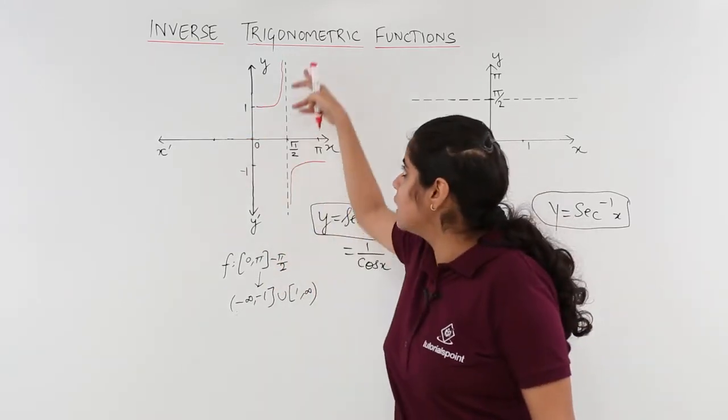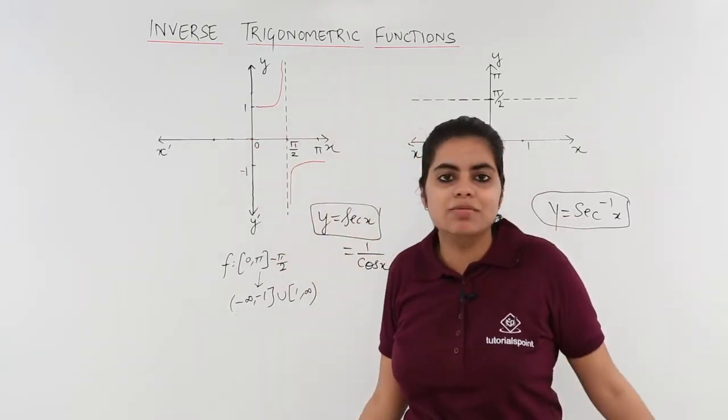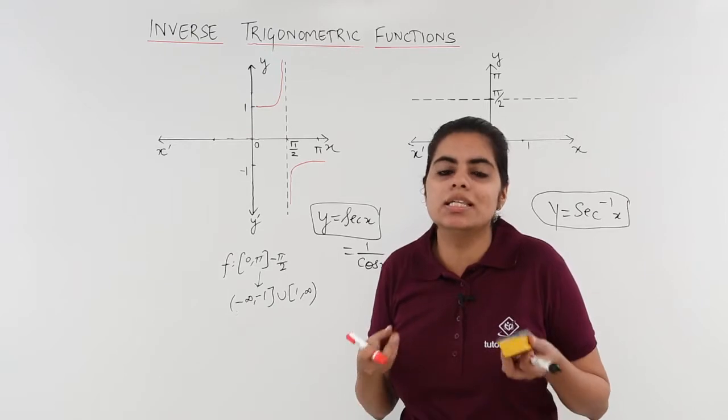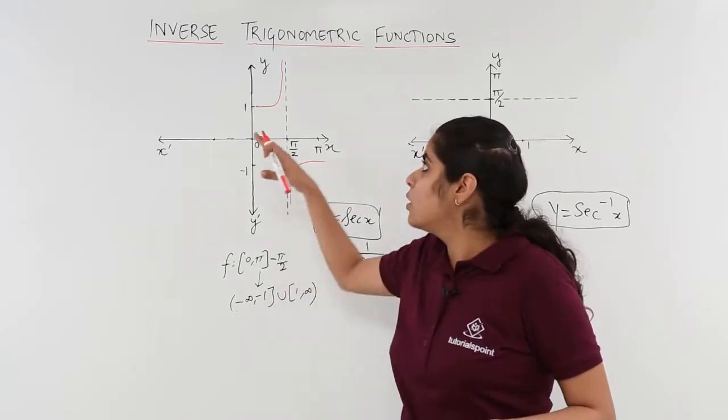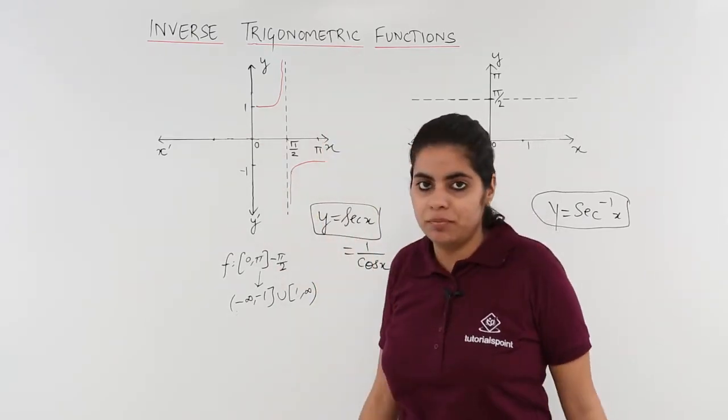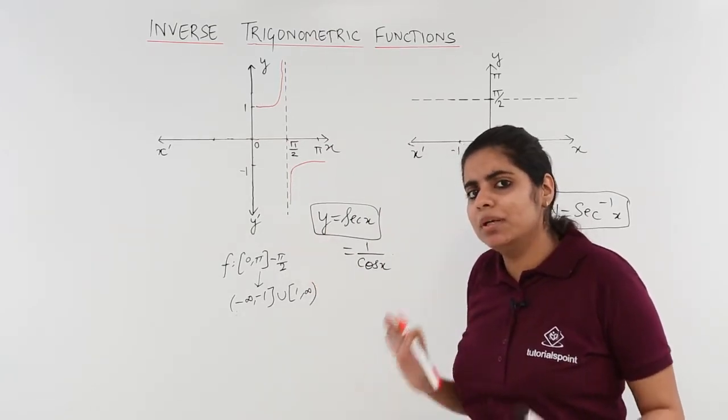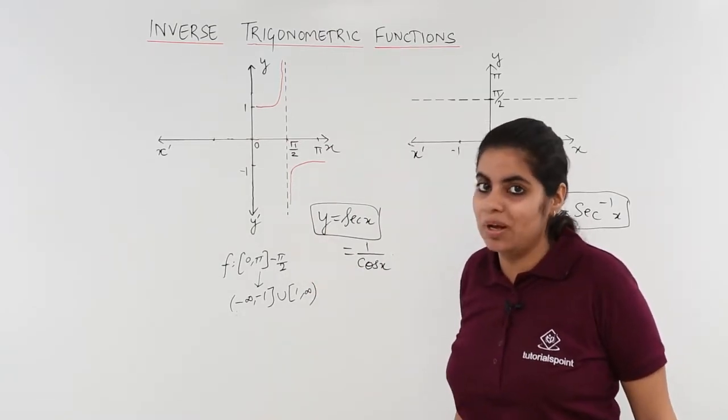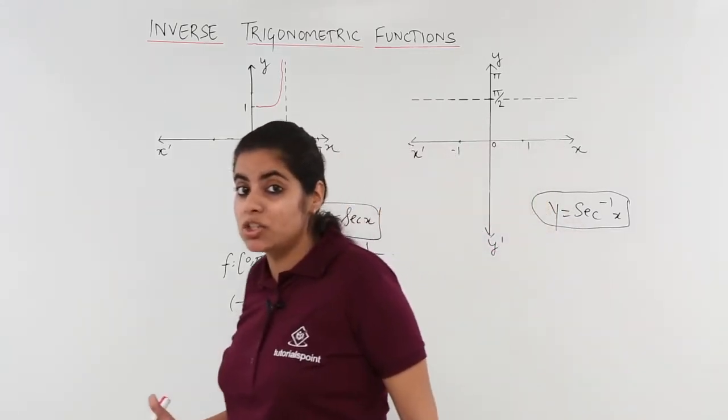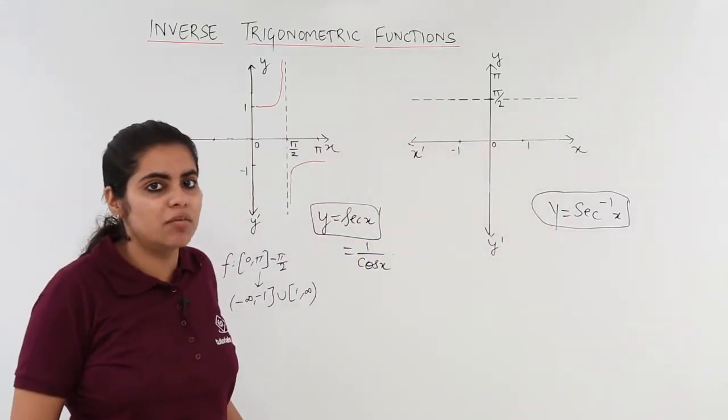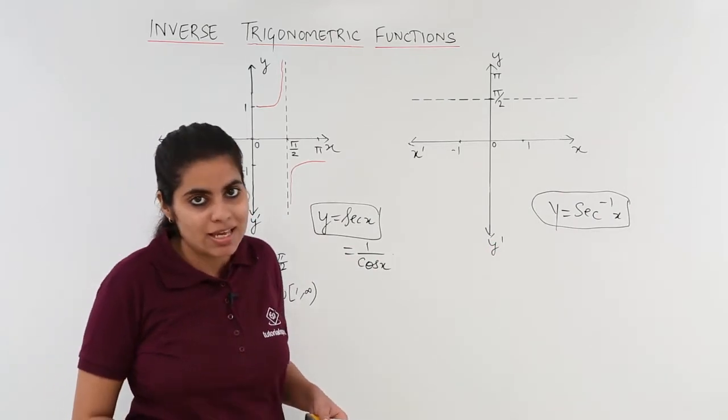This is the case for secant x. How did we obtain these curves? Simply just put various values like obtain secant 30, secant 60, secant 45, plot the points and just join the curve. Now once we have obtained the graph of secant x, are we limited to secant x only? No. We have to actually now use this knowledge of secant x to obtain the curve of secant inverse x.